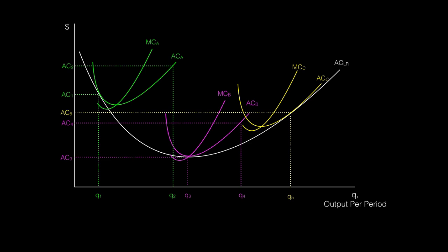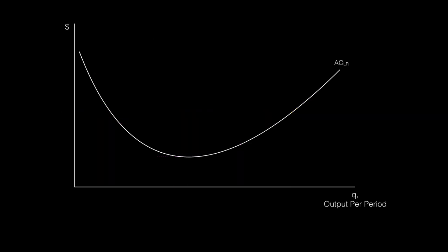The long run average cost curve shows all the possible per unit cost possibilities in the long run. The long run average cost curve illustrates economies of scale. Economies of scale exist in the range where long run average cost is decreasing, or in other words, where per unit costs decrease as output increases.